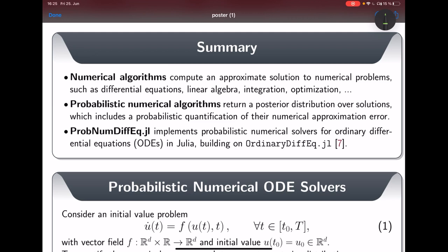In probabilistic numerics we care not just about getting a single solution estimate but we really want to get a posterior distribution over solutions where the uncertainty of the posterior distribution or the covariance should provide a probabilistic quantification of the numerical approximation error of the algorithm.